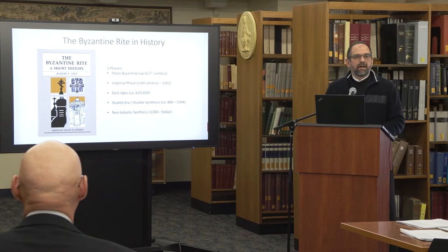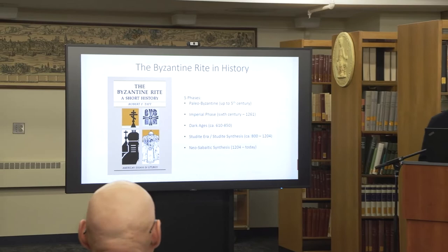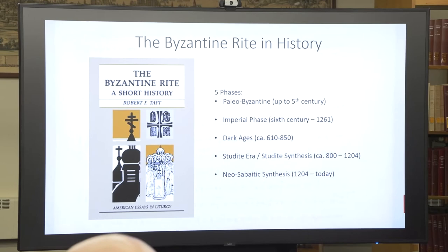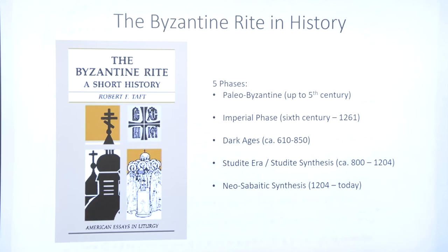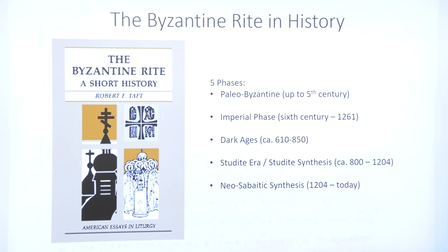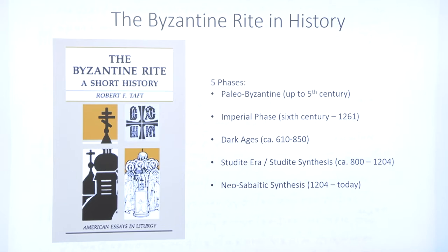The late Father Robert Taft is the person that I would say has defined modern Byzantine liturgical studies. And in his small but extremely significant book, The Byzantine Rite: A Short History, he basically establishes a grid upon which we are all called to study the history of Byzantine liturgy. He identified five phases in the evolution and the history of Byzantine liturgy, and as you will see, some overlap, also highlighting the complexity of figuring out this history.